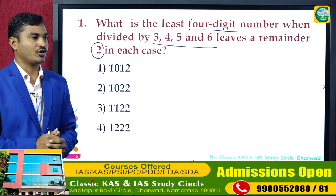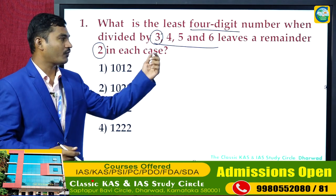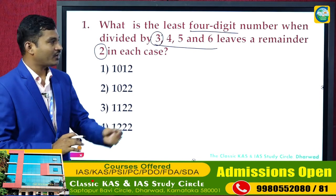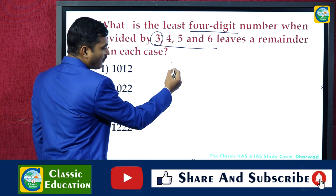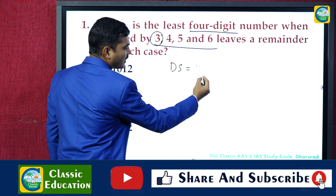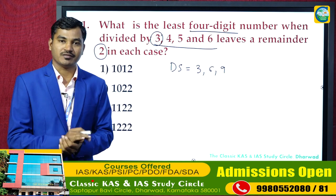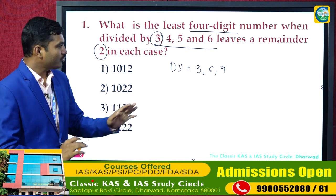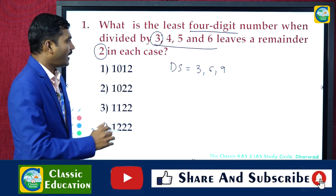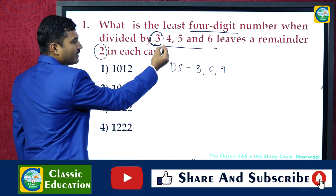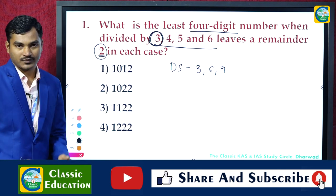In yesterday's class I told you about divisibility of 3 — and similarly we have divisibility rules for 4, 5, 6, and all. I told you: if the digit sum of any number is 3, 6, or 9, then that number is completely divisible by 3. Now, he is telling me the least four-digit number such that when you divide it by 3, you should get remainder 2.